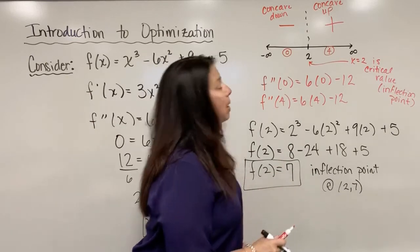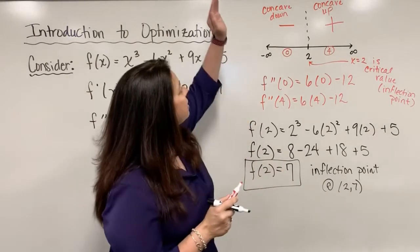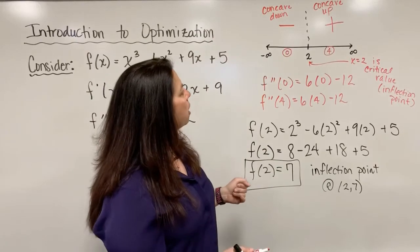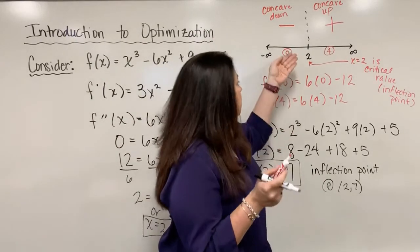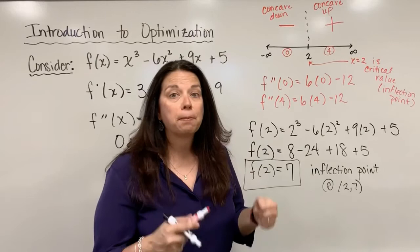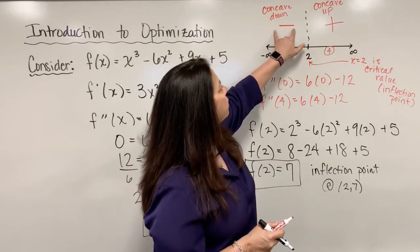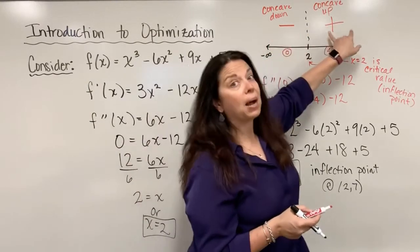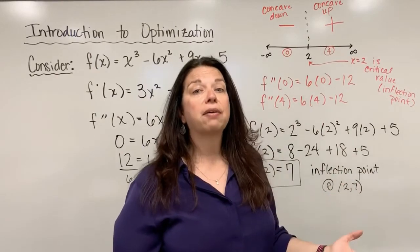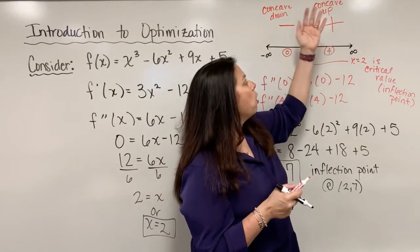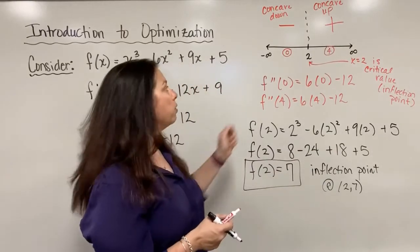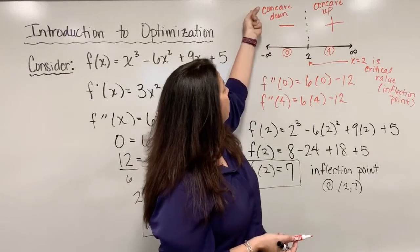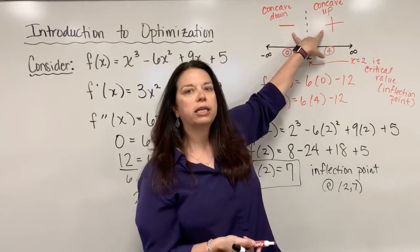One point to make, no pun intended, is if I go back to the sign chart you might be wondering what would happen in the sign chart to make that 2 not be a critical value, not be an inflection point. Well, if you ended up with a negative and a negative in those two intervals, or positive and positive, then you had no change in concavity. No change in concavity would simply mean that that value is not a critical value, it's not an inflection point.